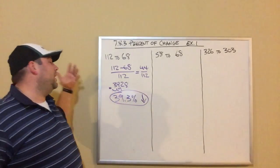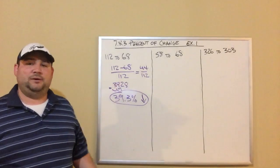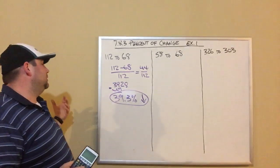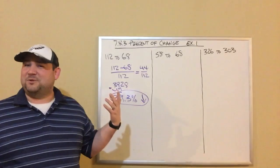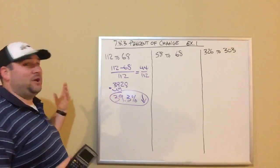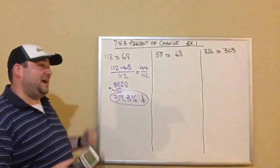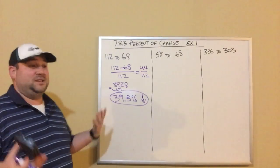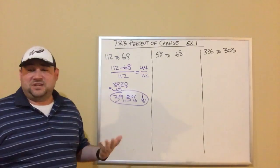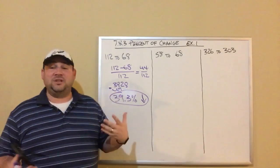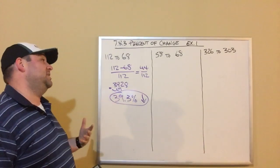So if I had 112, I don't know, 112, man, I should have come more prepared here. 112 baseballs. Then we went to practice, but we came back with only 68 baseballs. How many baseballs did we have? Or what was the percent of change in baseballs? We had a 39.3% decrease in baseballs.